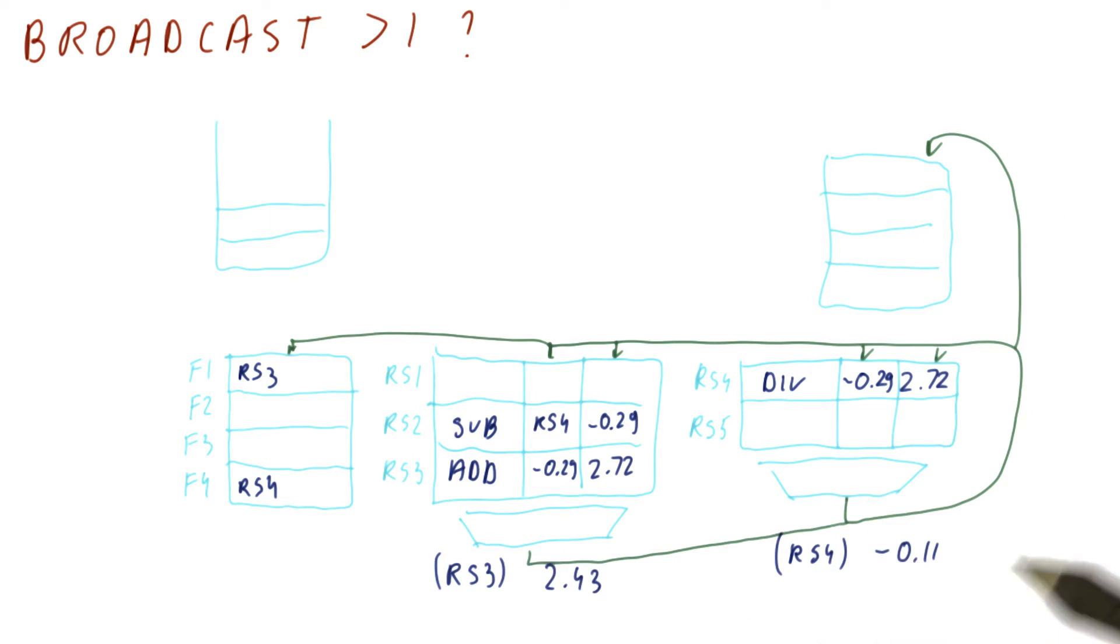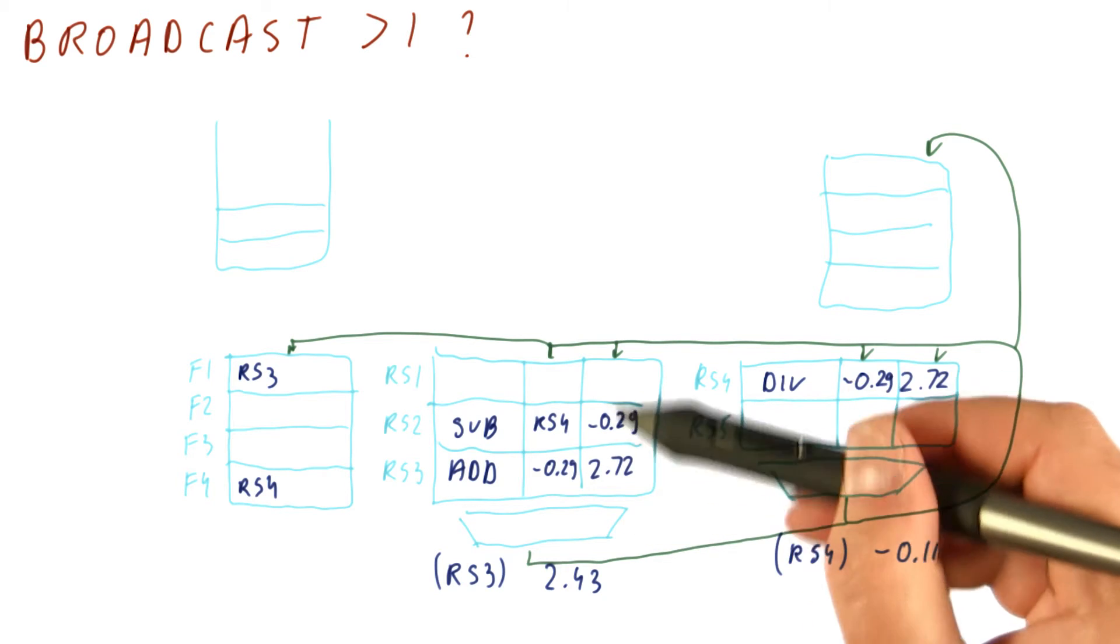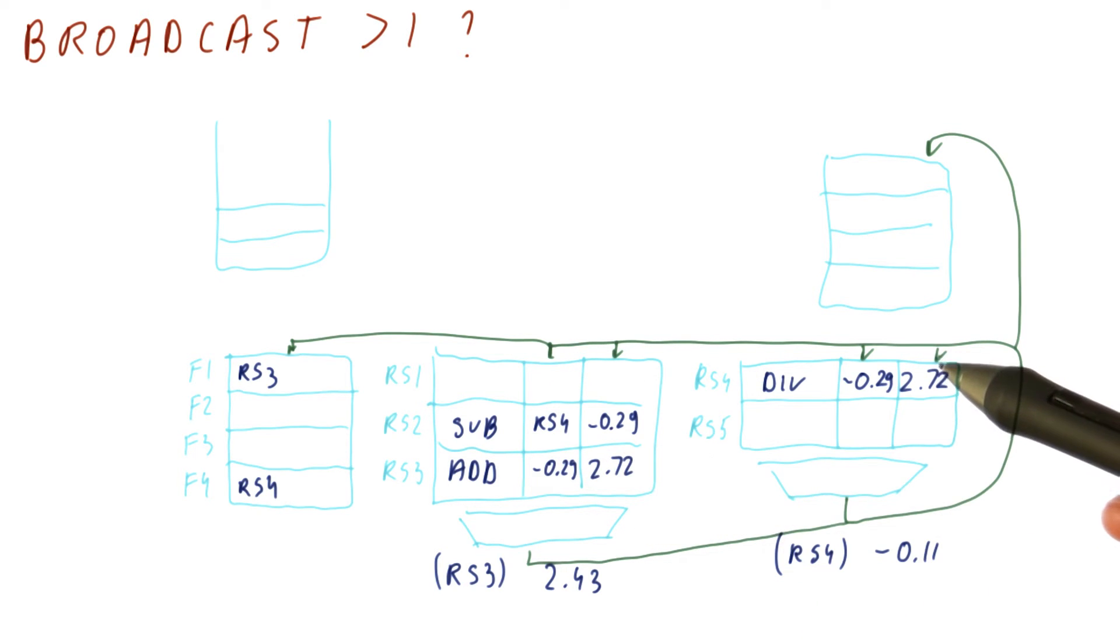Note that there would be twice as many comparators. Basically for each of the operands, for each of the instructions in the reservation stations, we need to try to match each of the tags that are being broadcast and be able to select the result or not depending on whether it matches.